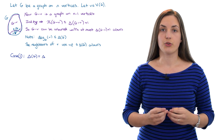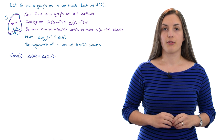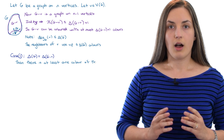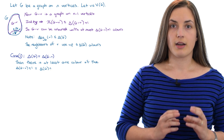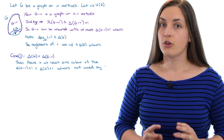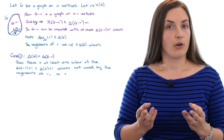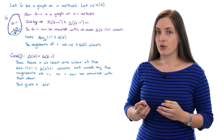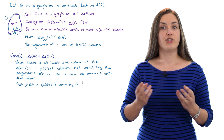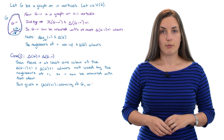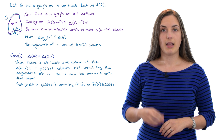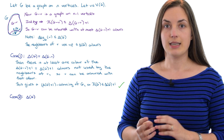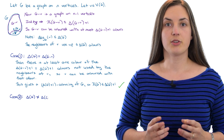The first case is if the maximum degree of the graph G is equal to the maximum degree of the graph G without vertex V. In this case there is at least one color of the maximum degree plus one colors not being used by the neighbors of V, so we can go ahead and color V with that color. This gives us a max degree plus one coloring of G, so the chromatic number of G is at most the maximum degree plus one, and in this case we're done.